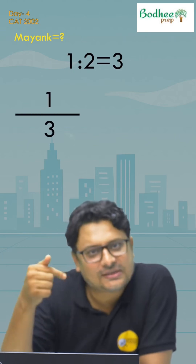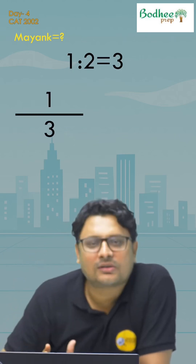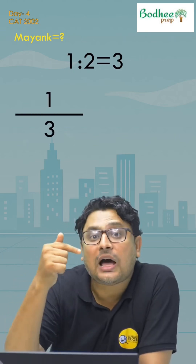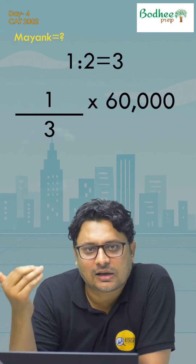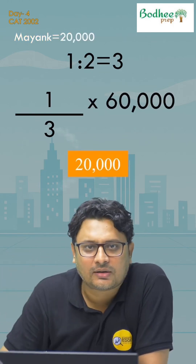What does that mean? If Mayank gets 1 rupee, then the rest get 2 rupees — so total is 3 rupees. Mayank will get 1 out of 3. The total is 60,000, so that makes 20,000 for Mayank.